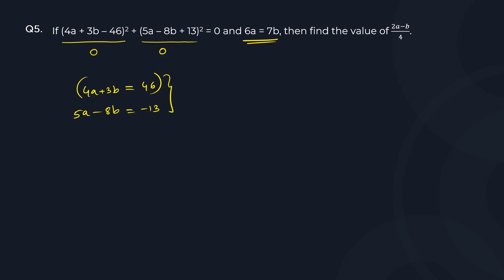So you can multiply this by 5, multiply this by 4. You'll get 20a plus 15b equal to 230, and 20a minus 32b equal to minus 52.